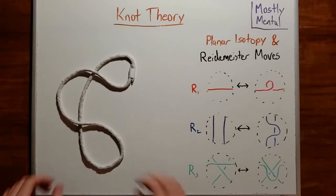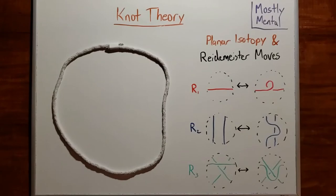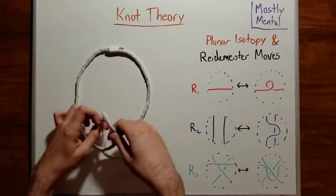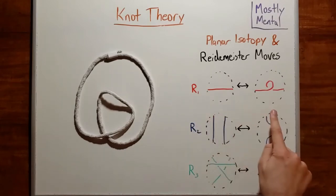Okay, but what if we do want to change the crossings? Well, the simplest thing we could do is take a strand and add a loop to it. That introduces a new crossing like so. If we draw that in a diagram, we get something like this.